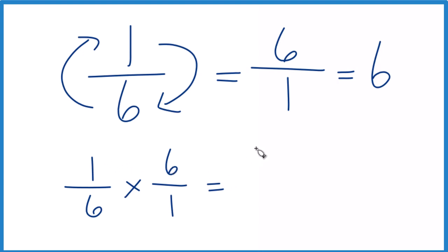So one times six is six. Six times one is six. And six divided by six, that equals one. So we know we did this correctly.